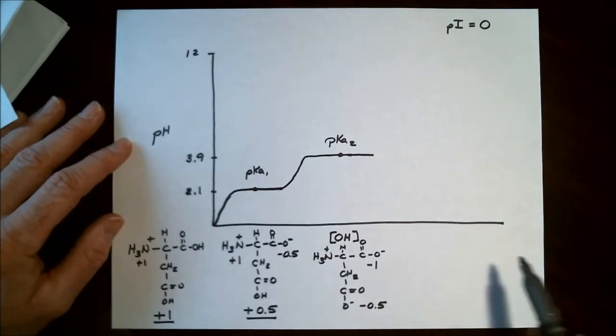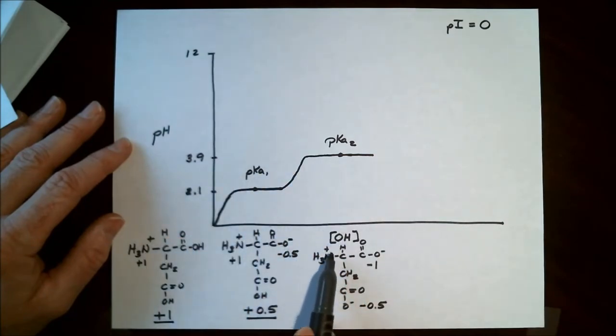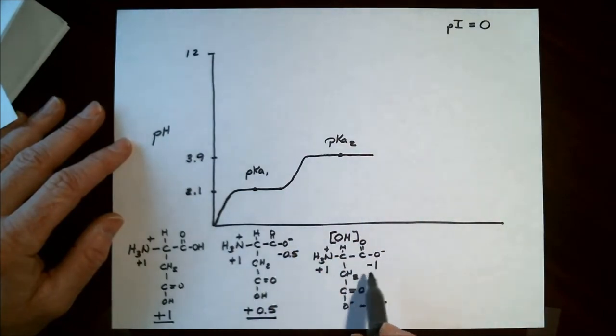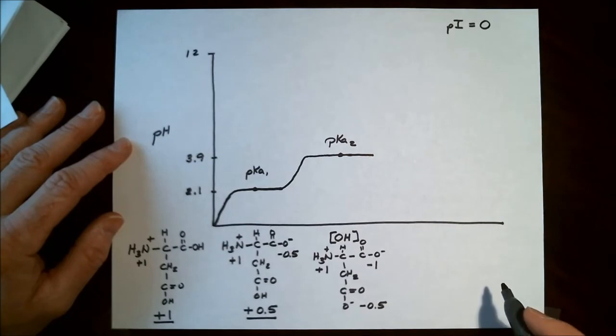Now because we are still under very acidic conditions, the primary amine here attached to the alpha carbon will remain protonated and contribute a plus 1 charge. So to calculate the overall charge on this particular molecule at pKa2, we just add up the contributions of charges of each functional group. Plus 1, plus minus 1, 0, minus 0.5. So the overall charge on this molecule at pKa2 at pH of 3.9 is a negative 0.5.